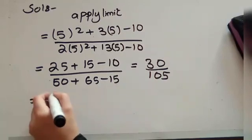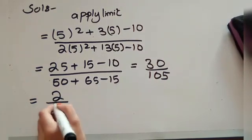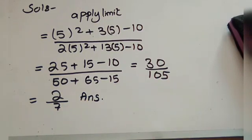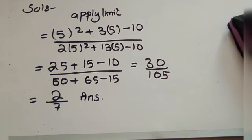If we calculate carefully, we get 30 over 105, which simplifies to 2 upon 7. So our answer is 2 upon 7.